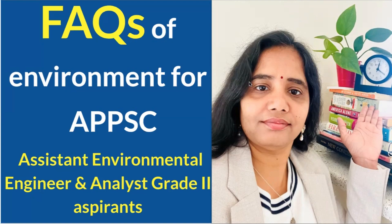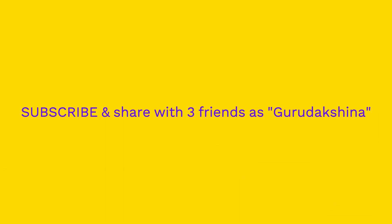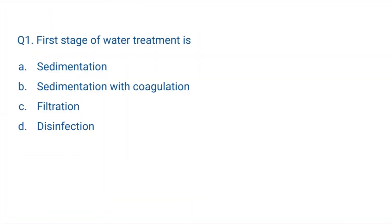I will use both English and Hindi in this video so that everybody can understand. Question number one: First stage of water treatment is — A. Sedimentation, B. Sedimentation with coagulation, C. Filtration, or D. Disinfection.